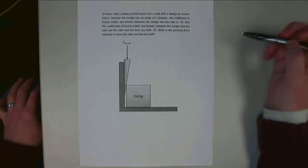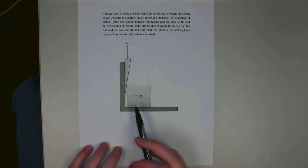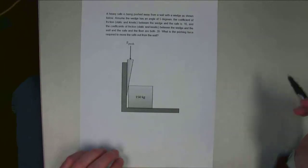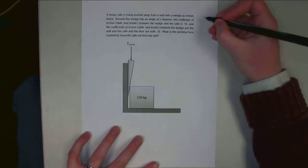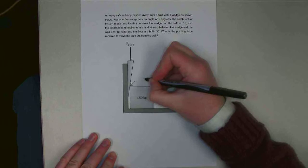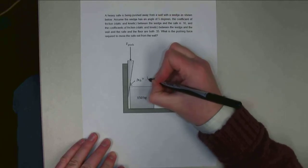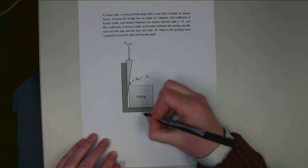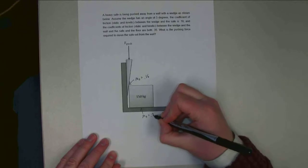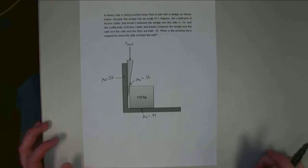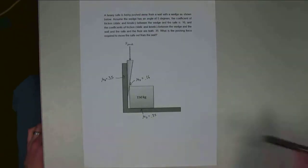Hello. In this problem, we've got a heavy safe with a mass of 150 kilograms close up against the wall. We're using a wedge with a five-degree angle to push it away. The coefficient of friction — static and kinetic — between the wedge and the safe is 0.16. Between the wall and the wedge, and between the safe and the floor, both coefficients of friction are 0.35. We need to figure out what pushing force is required to move the safe out from the wall.